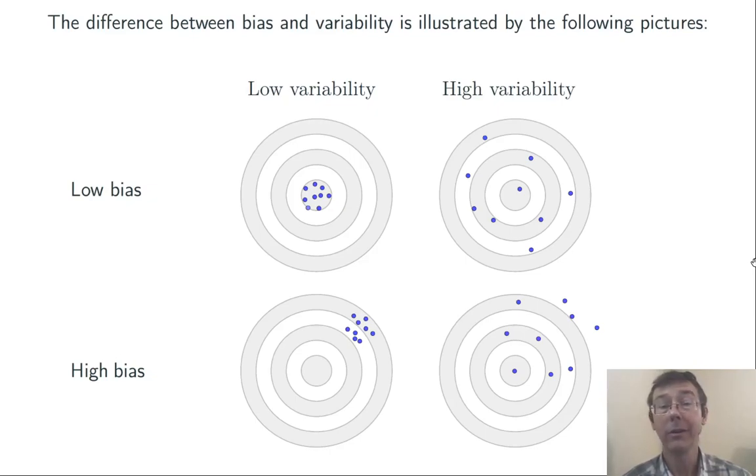Do note, however, even in that worst case scenario, high variability, high bias, I still hit the bullseye once. So even the worst kind of study can be correct if the high bias and the high variability end up balancing out one another.